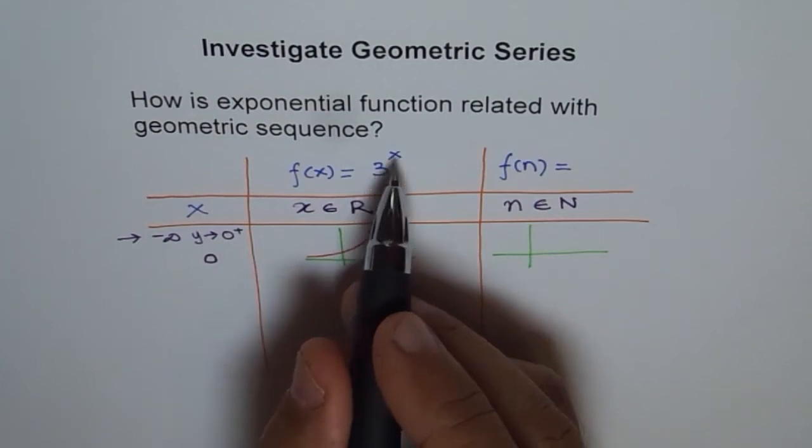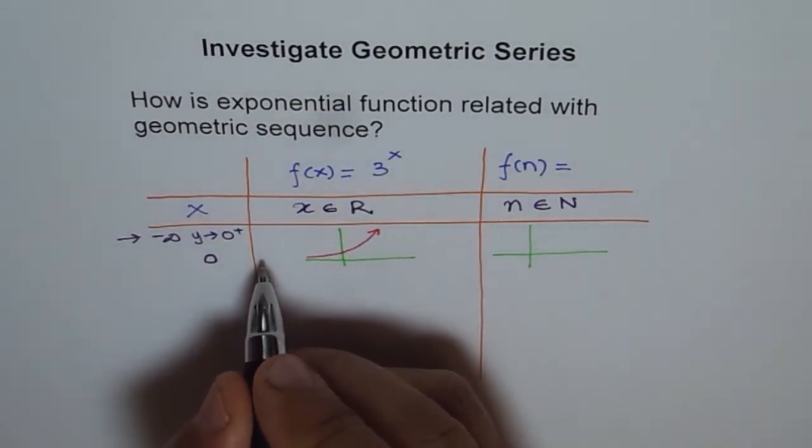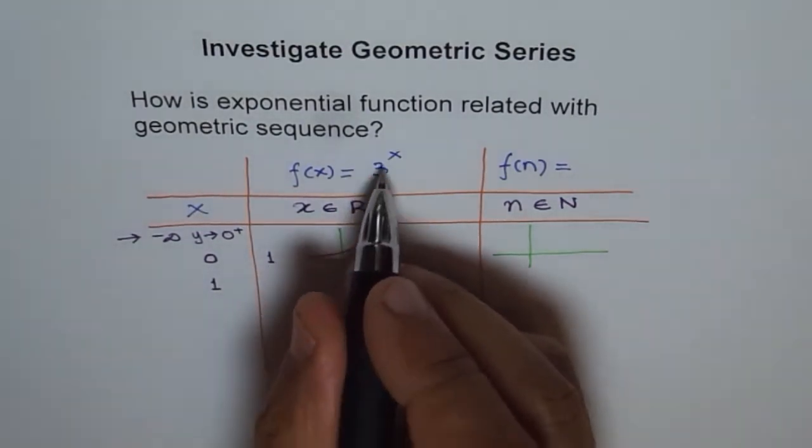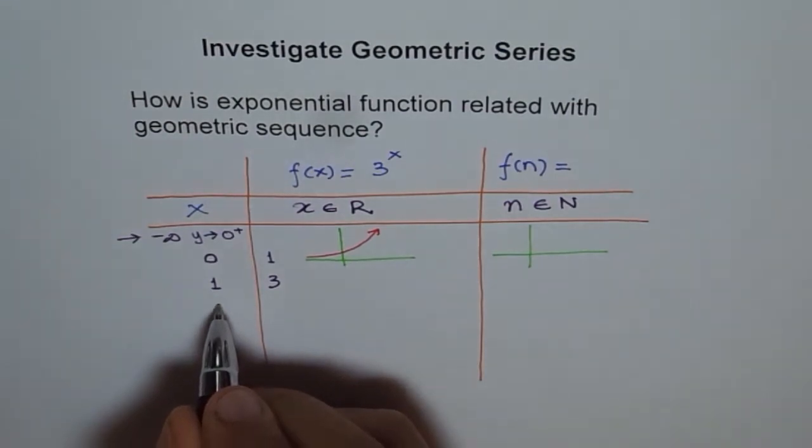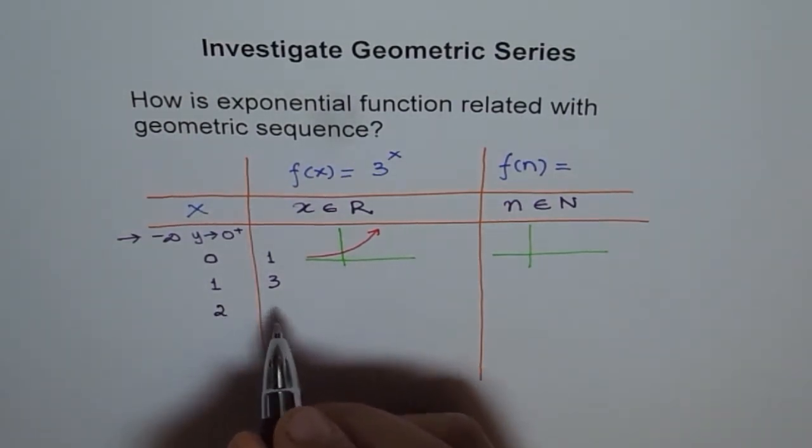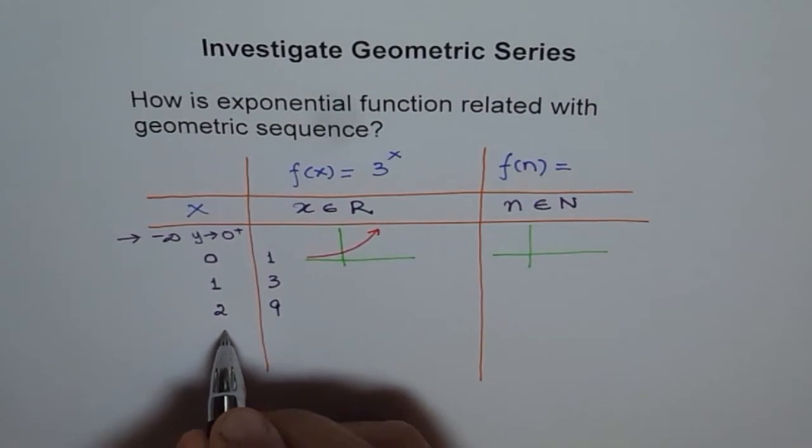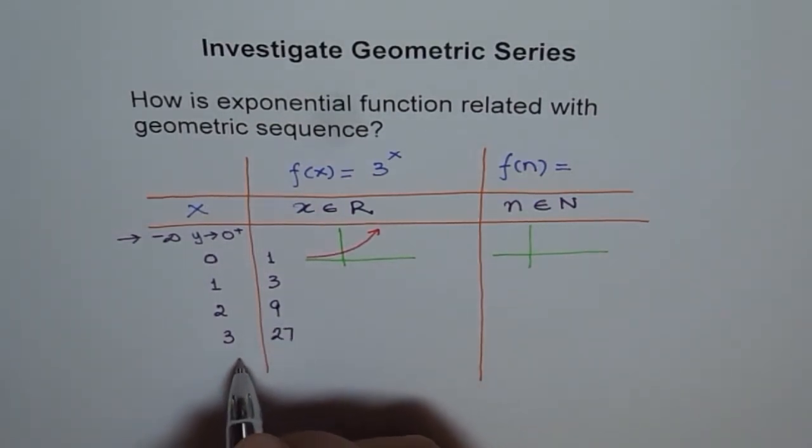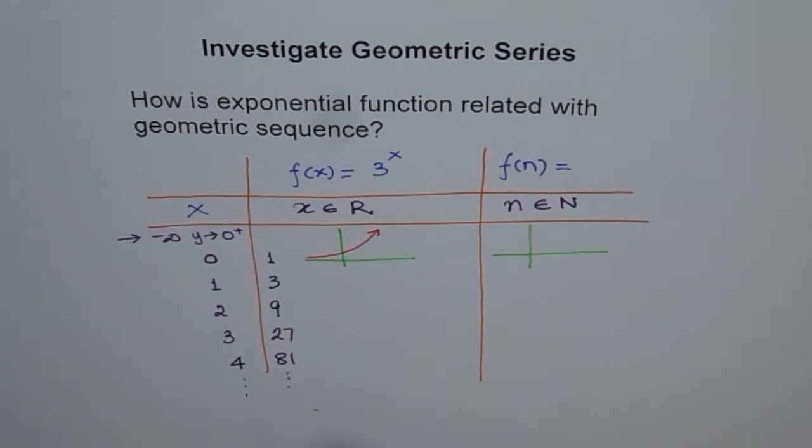But let us consider 0 onwards. So let us say x is 0. So if x is 0, then 3 to the power of x will be 1. If x is 1, then 3 to the power of 1 will be 3. If I have x equals to 2, then 3 to the power of 2 is 9. For 3, it will be 27. For 4, it will be 81 and so on. So in general, we have a value which is 3 to the power of x.